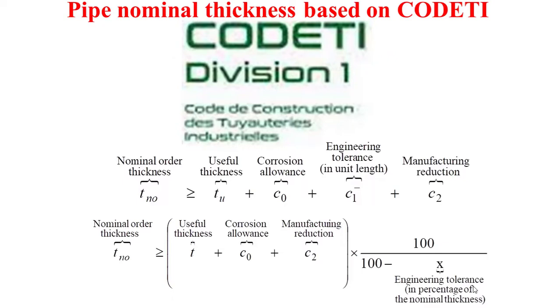All of this multiplied by 100 divided by 100 minus X. Of course, with X being the engineering tolerance in percentage of the nominal thickness.